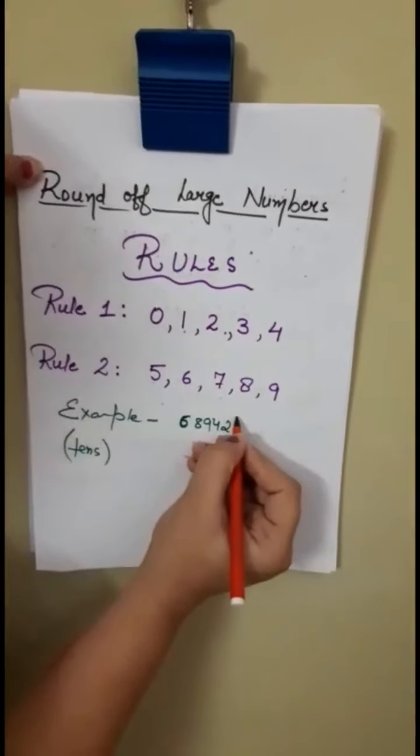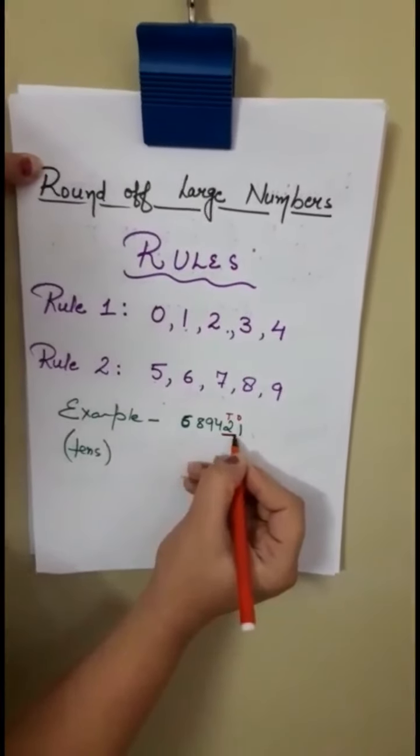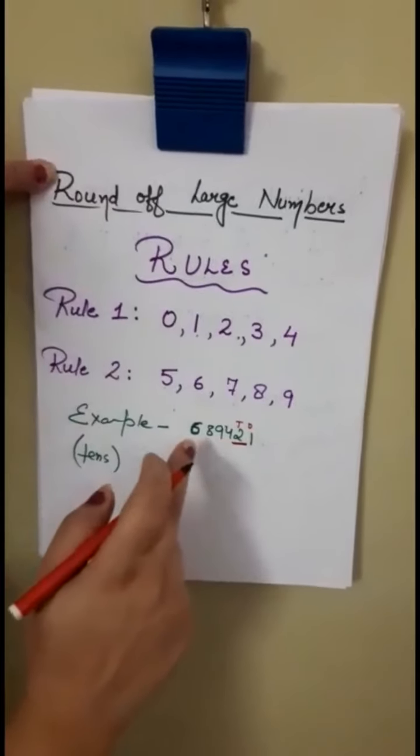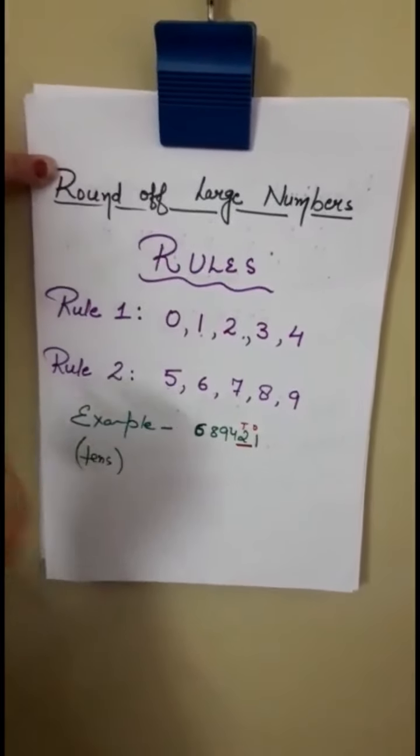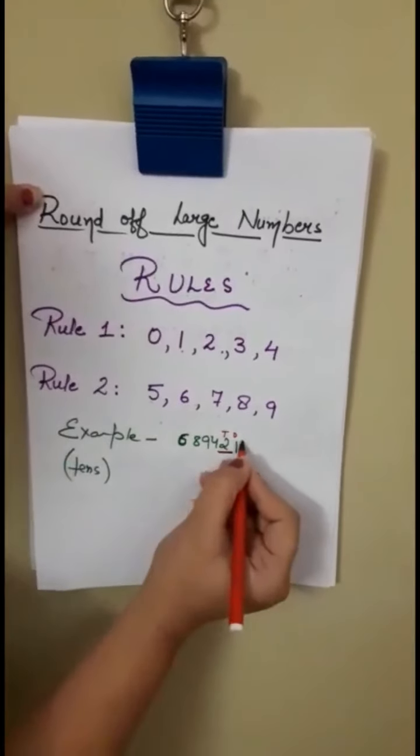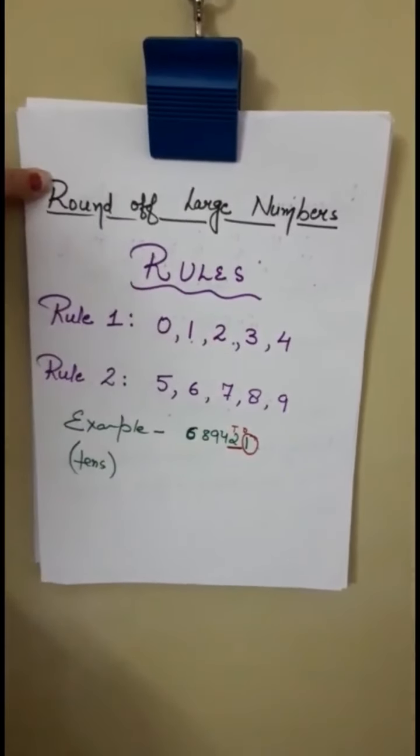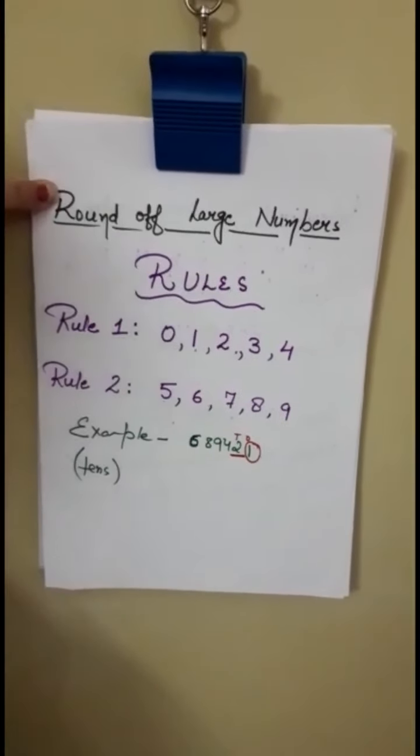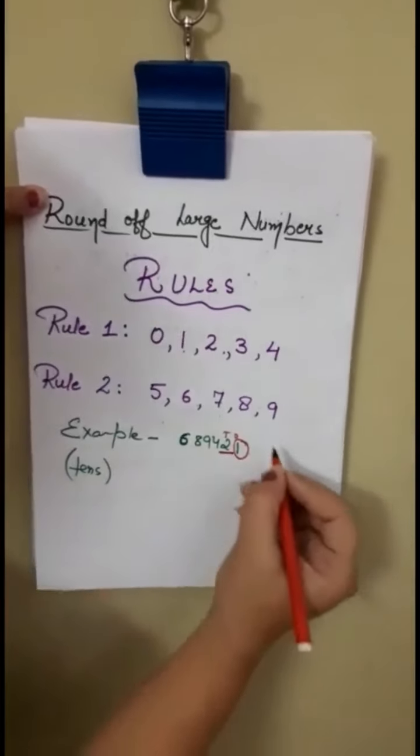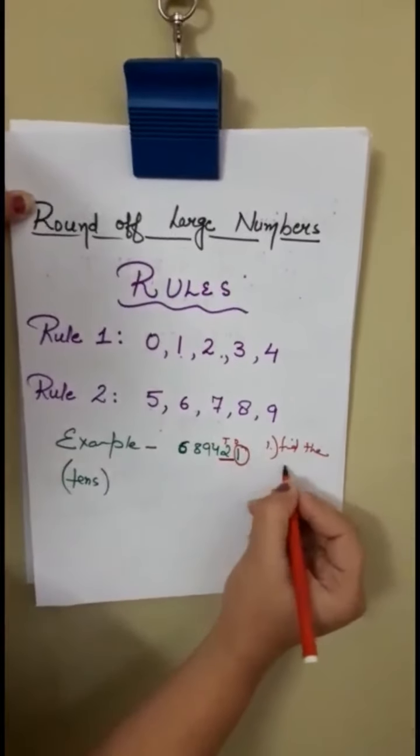It's ones. Yaad hai apko? This is 10s. 10s ki place ko round off karna hai, to isko hum kar lenge underline. Ab 10s ki place ka right side wala neighbor kaun hai? It's ones place. Yaad hai? Once ki place iski neighbor hai right side ki. To just put a circle to the neighboring number. Because neighboring number hume help karega aapne exact number ko round off karne ke liye. To sabse pehla point hume karna ye hota hai ki we have to find the neighboring number.